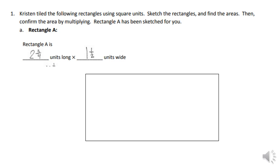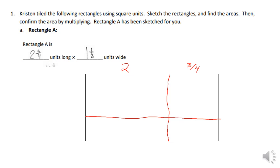The first problem says the rectangle is two and three-quarters long. I'm going to give it some spatial sense and make sure I show the difference — this is my two, and I'm splitting up the three-quarters here. Now vertically for my width dimension, this is going to be one and this is my half. So I can see this part here is one times two, which is two, and this one is one times three-fourths, which is three-fourths.